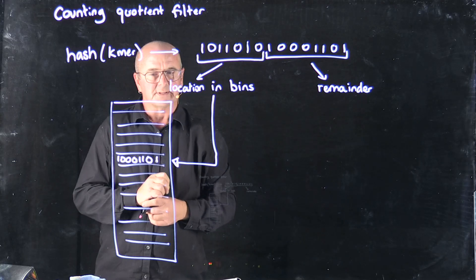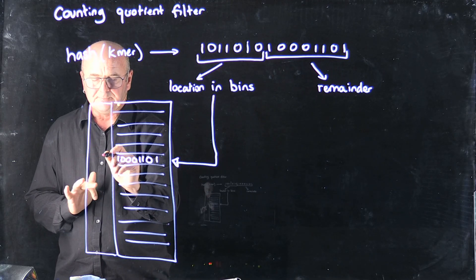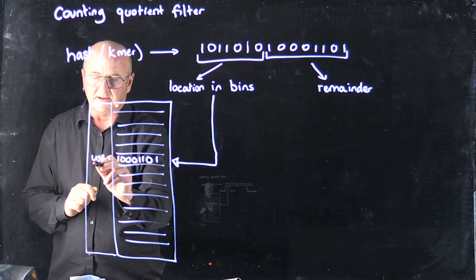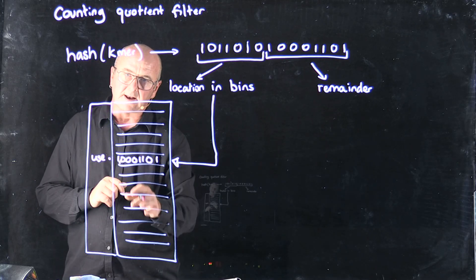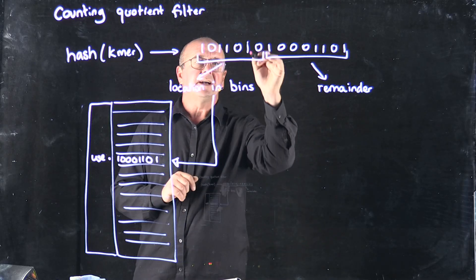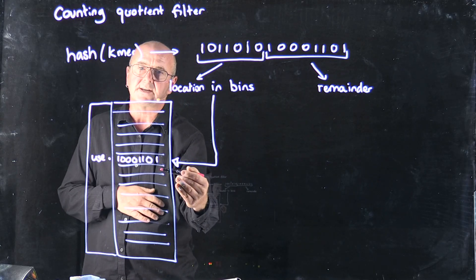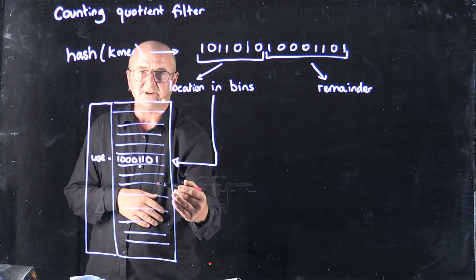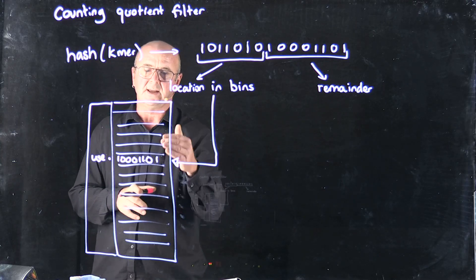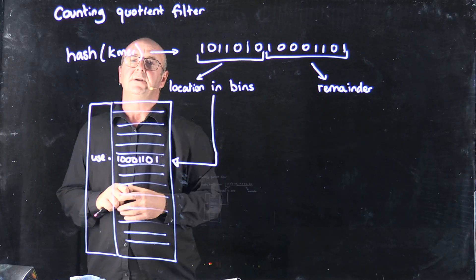The way that the counting quotient filter works is that you have a couple of vectors of metadata that tell you things like: is this particular bin in use? Is it the first member of a series? Is it the last member of a series? And so on. If you take a different k-mer and get a hash, and the upper bits arrive at the same location, then you just use linear addressing or quadratic addressing to find the next open slot. Because you've got a set of metadata bits, you can set appropriate bits to indicate to jump to the next location, or that you're at the end of a run, so what you're looking for is not here.